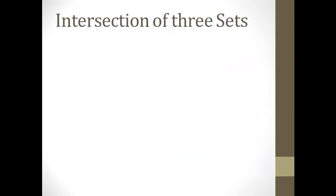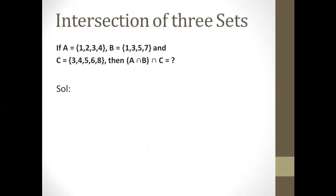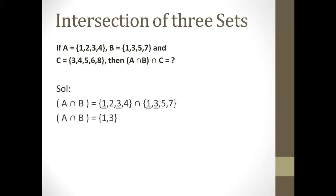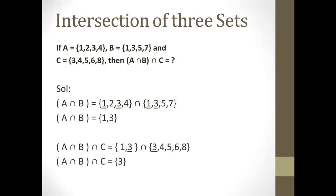Now let's understand the intersection of three sets. We have the same question but this time we find A intersection B intersection C. First, we find A intersection B: in intersection we write only the common elements of both sets. Here 1 and 3 are common, so A intersection B equals {1, 3}. Then we take intersection of this result with set C. In {1, 3} and set C, only 3 is common, so A intersection B intersection C equals {3}.